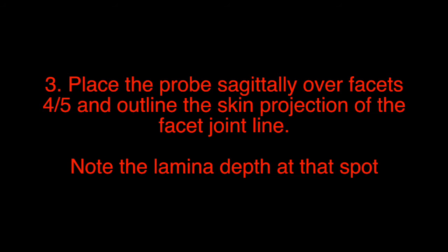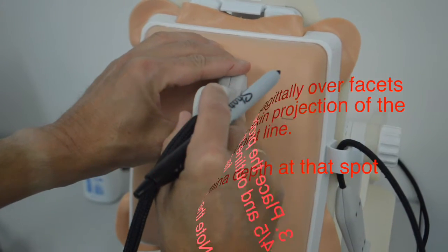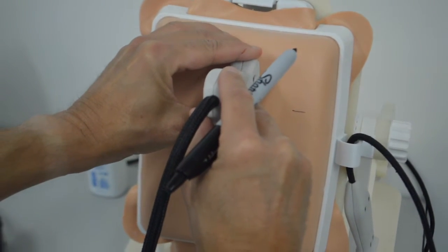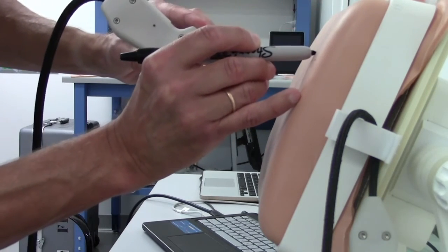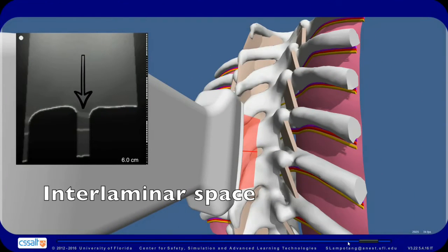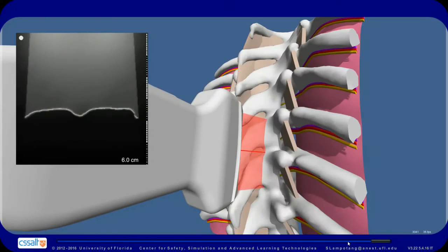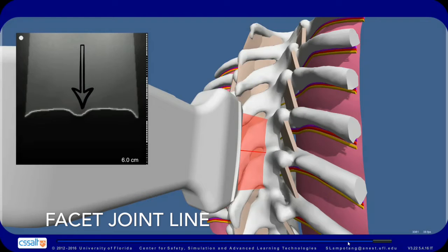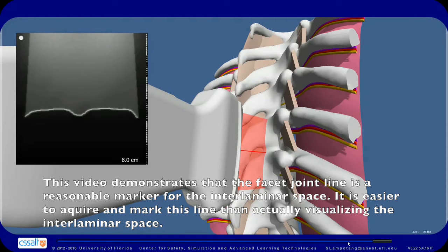Step 3: Place the probe sagittally over facets 4 and 5 and outline the skin projection of the facet joint line. Note the lamina depth at that spot. We use the facet joint line as a surrogate marker for the horizontal level of the interlaminar space. The facet joint line is a reasonable marker for the interlaminar space, and it is easier to acquire and mark this line than to actually visualize the interlaminar space.